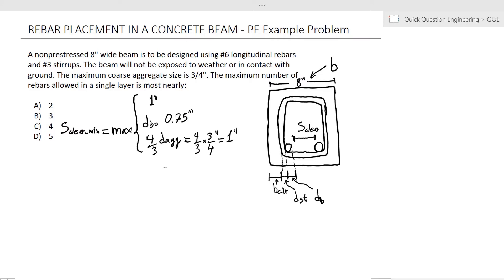I'm saying that S-clear minimum is the maximum of either one inch, the rebar diameter, which a number 6 rebar is 3/4 of an inch, or 4/3 the maximum coarse aggregate size, which is also one inch. So the minimum clear spacing between rebars is one inch.